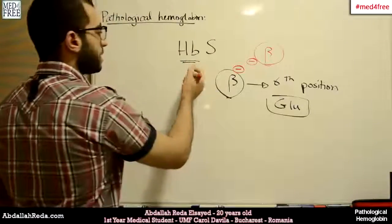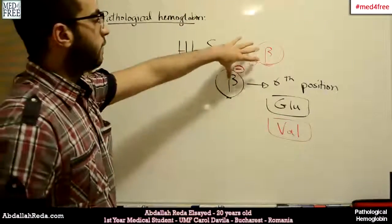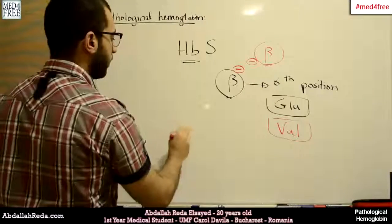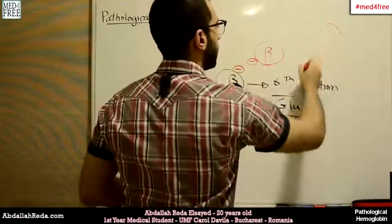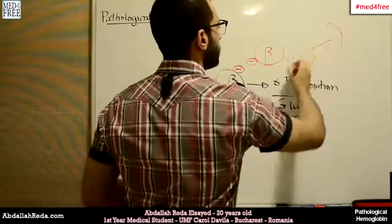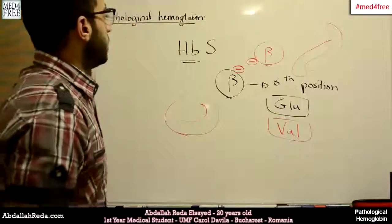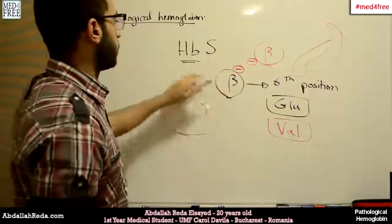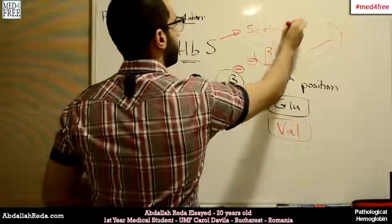In the case of HbS, at the sixth position we have valine instead. So instead of repelling, the heme groups start to stick to each other. This leads to transformation of the shape of the red blood cell — instead of being circular, it becomes sickle-shaped. The red blood cells start to stick to each other, lose their affinity to bind oxygen normally, and begin to coagulate. This affects the ability of red blood cells to bind oxygen and causes anemia. HbS causes sickle cell anemia.